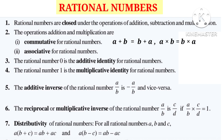Associative property for Rational Numbers: if we take A, B, C as any three rational numbers, then (A plus B) plus C is equal to A plus (B plus C) for addition. In multiplication, (A into B) into C is equal to A into (B into C).